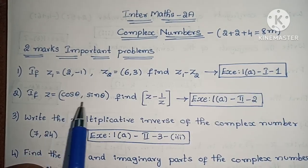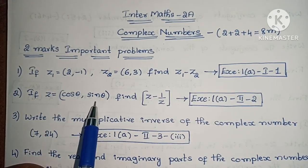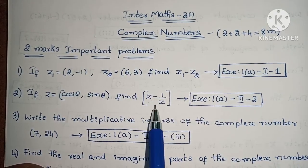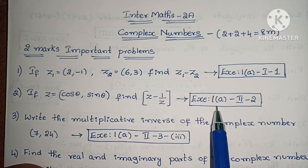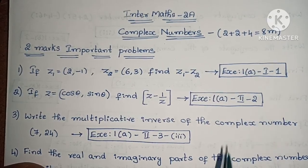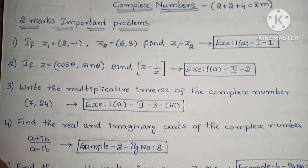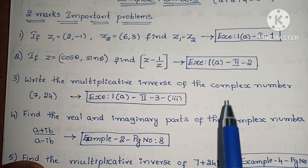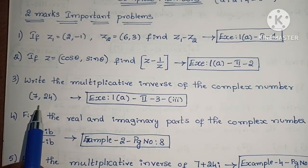If z equals cos theta plus i sin theta, find z minus 1 by z. Write the multiplicative inverse of the complex number 7 plus 24i.